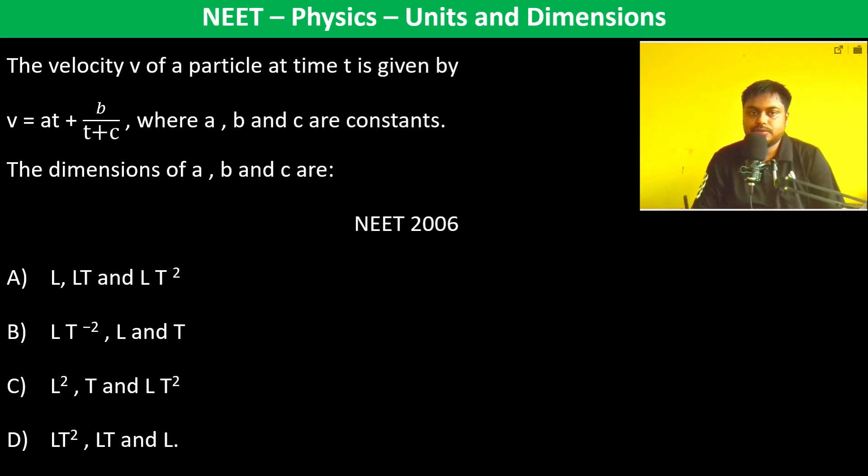The velocity v of a particle at a time t is given by this. So v is equal to at plus b by t plus c.